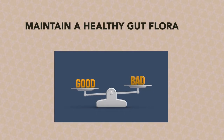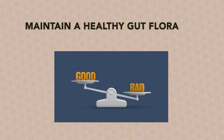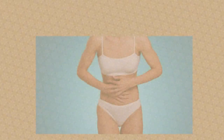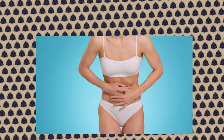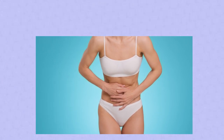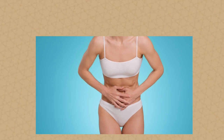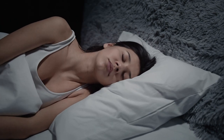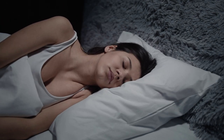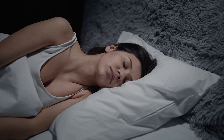How to maintain a healthy gut flora balance? To maintain a healthy gut flora balance, it is important to understand the signs that your gut flora may be out of balance. If you are experiencing digestive issues like irritable bowel syndrome, frequent stomach aches, bloating or gas, constipation, diarrhea, or food sensitivities, these may be signs that your gut bacteria is out of balance. Additionally, a weakened immune system or feeling unusually tired and fatigued most days can also be related to an imbalance in your gut bacteria.